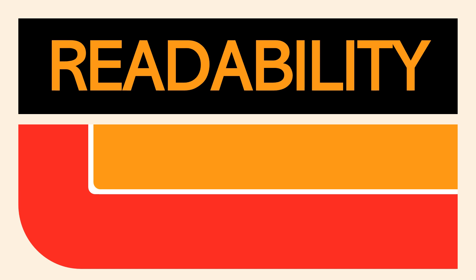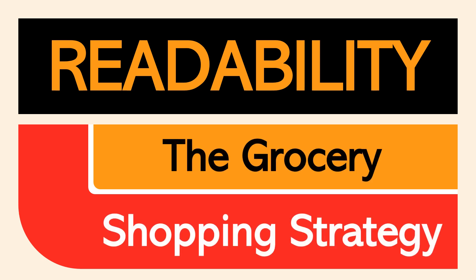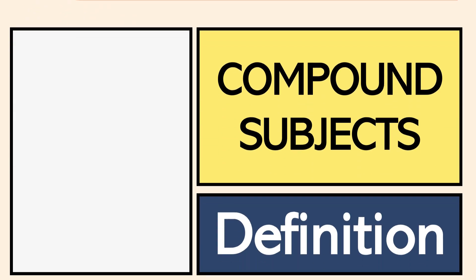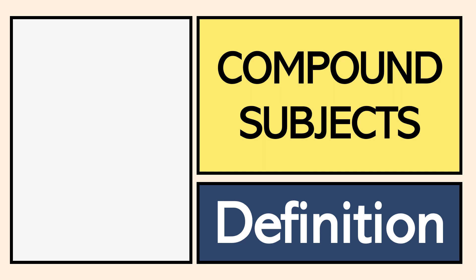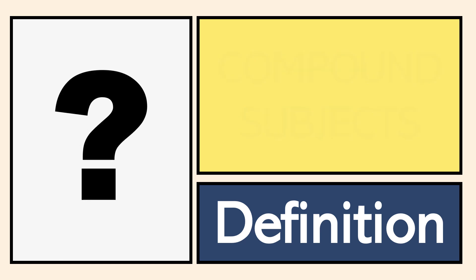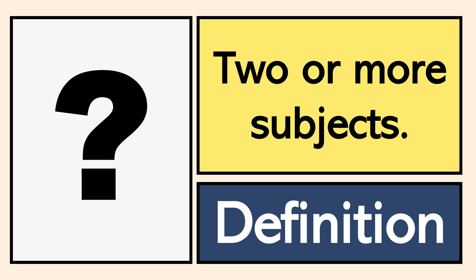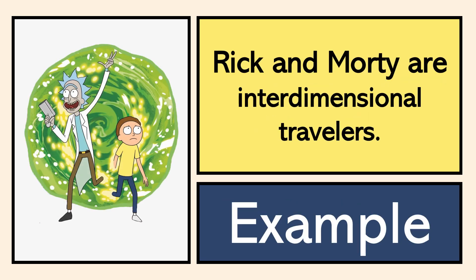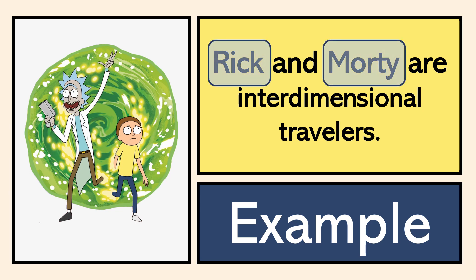This video is going to discuss how you can improve readability with something called the grocery shopping strategy. We're going to begin by talking about what's known as compound subjects. A compound subject is any time you have two or more subjects grouped together in a sentence. For example, 'Rick and Morty are interdimensional travelers.' Here we have Rick and Morty as two subjects sharing the verb 'are.'